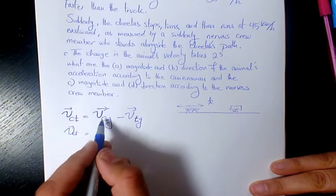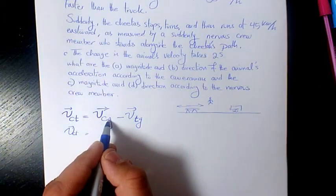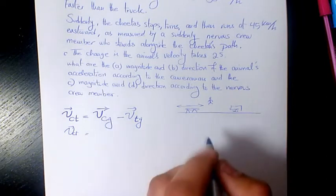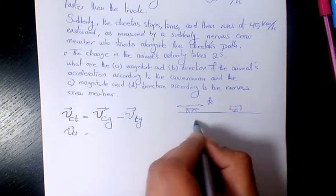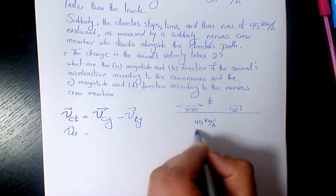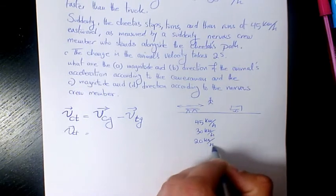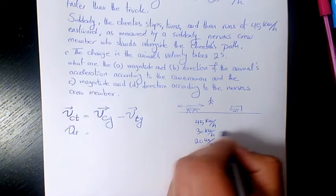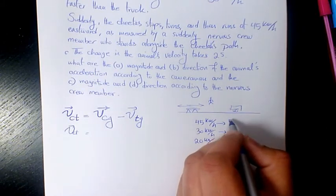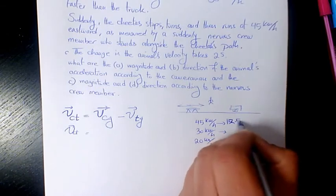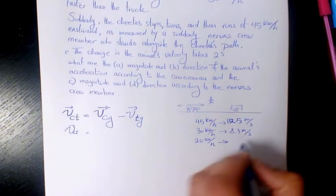First I need to convert kilometers per hour to meters per second. We have 45 km/h, 30 km/h, and 20 km/h. Converting: 45 km/h is 12.5 m/s, 30 km/h is 8.3 m/s, and 20 km/h is 5.6 m/s.